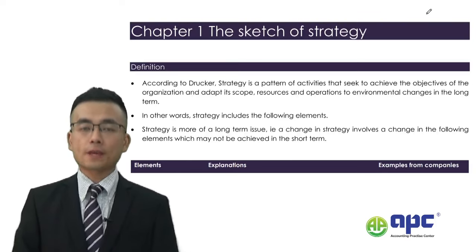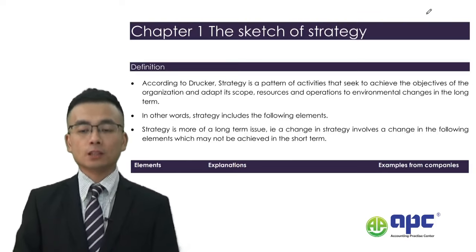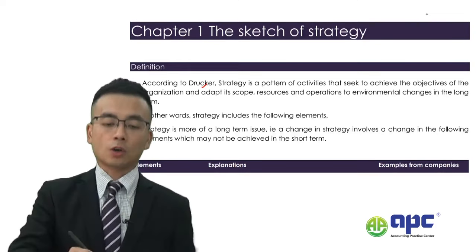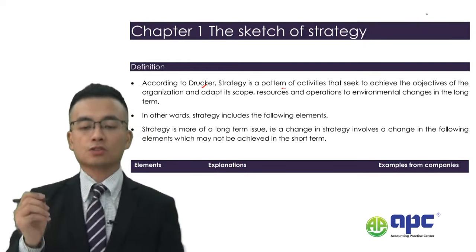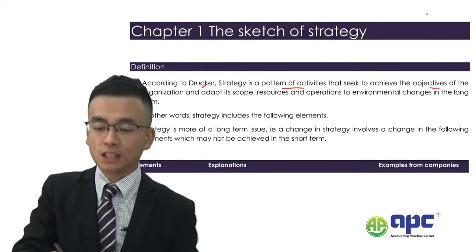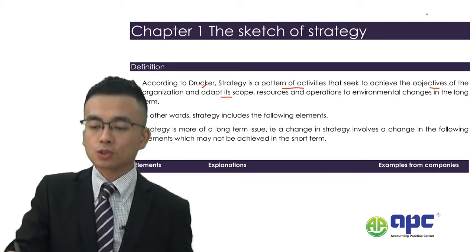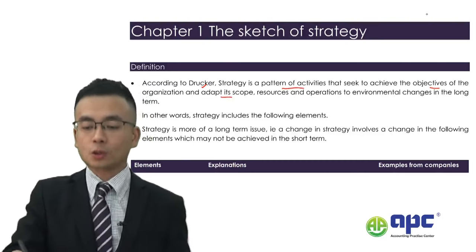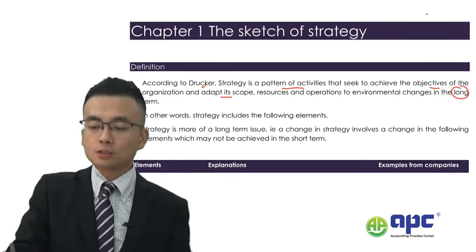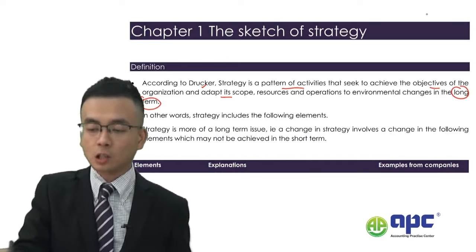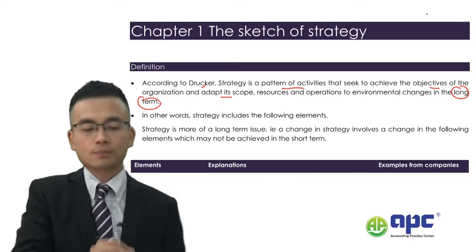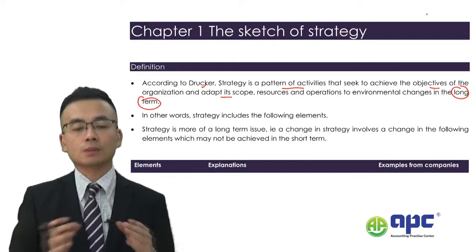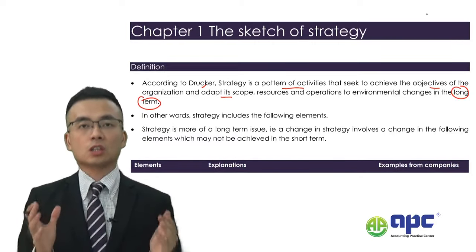There will be different theories illustrating about strategies. For example, one of the theories is according to Jocker: strategy is a pattern for activities to achieve objectives, and then adapt the scope, resources, and operations to changes in the environment in the long term. So we'll focus on the word long-term — strategy is all about long-term stuff.